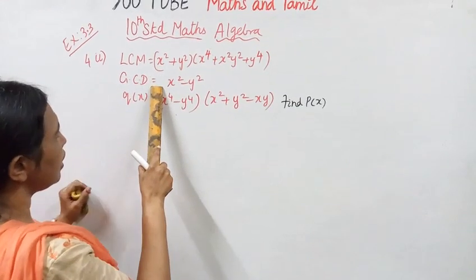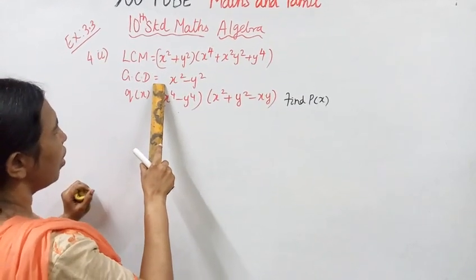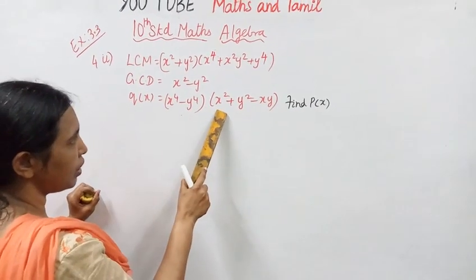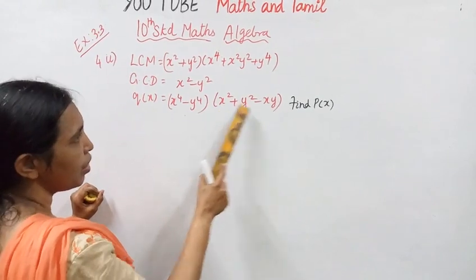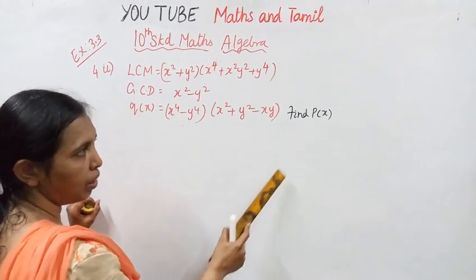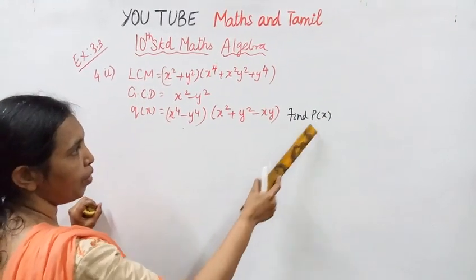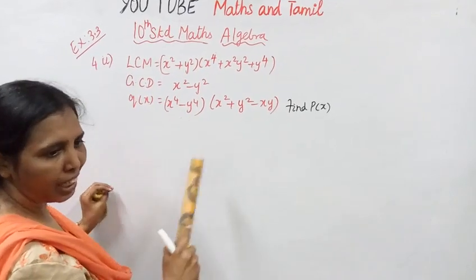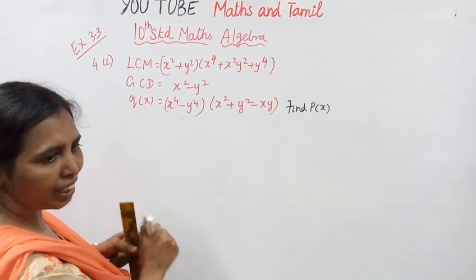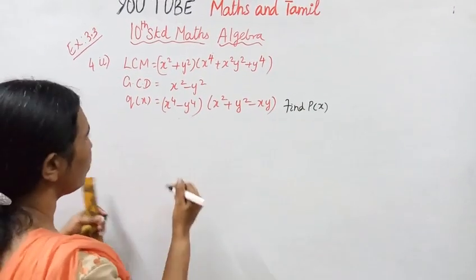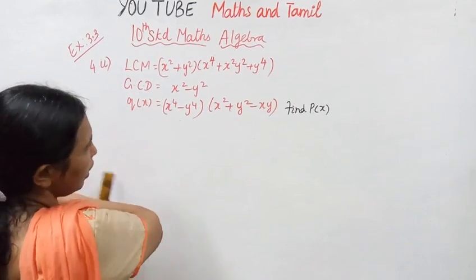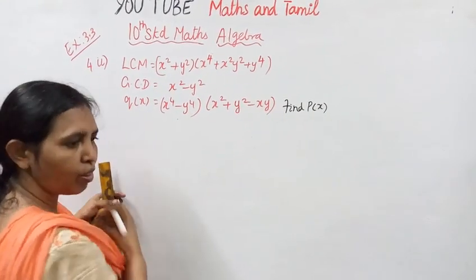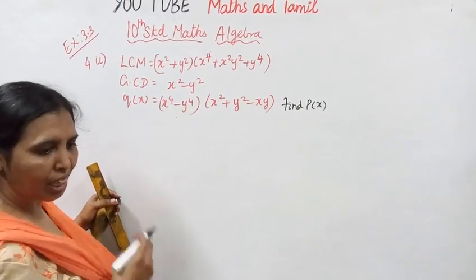LCM and GCD are given for one of the polynomials — find the other polynomial. We use the formula: f of x into g of x equals LCM into GCD.